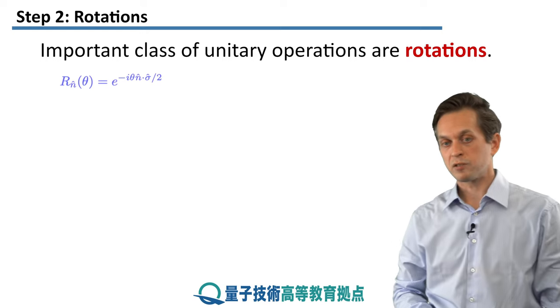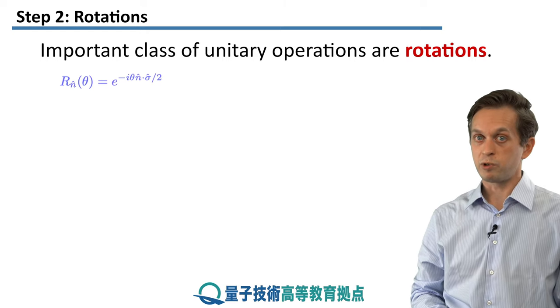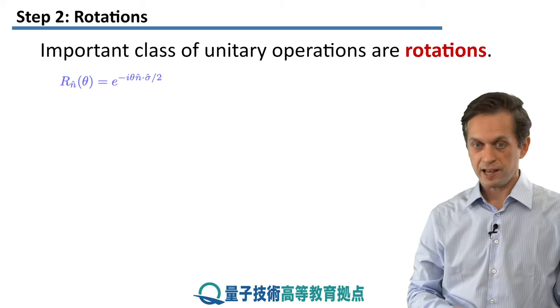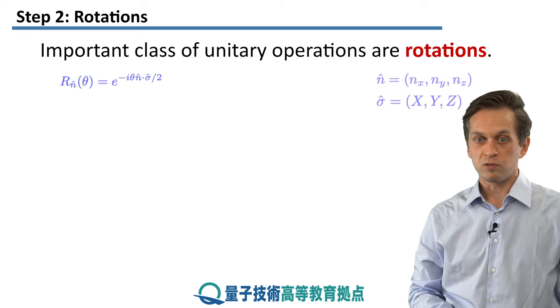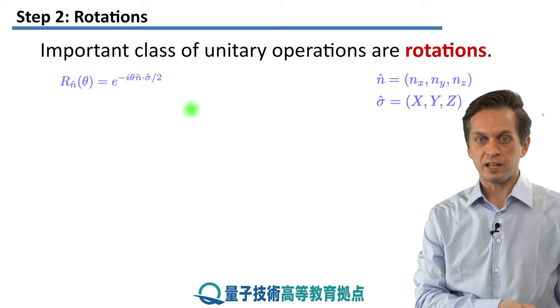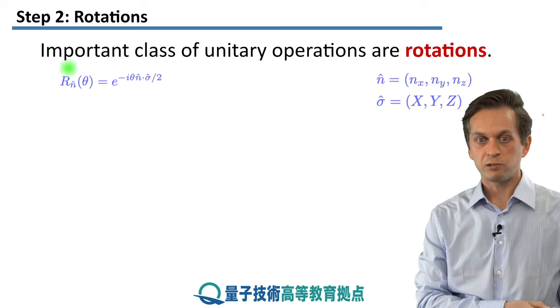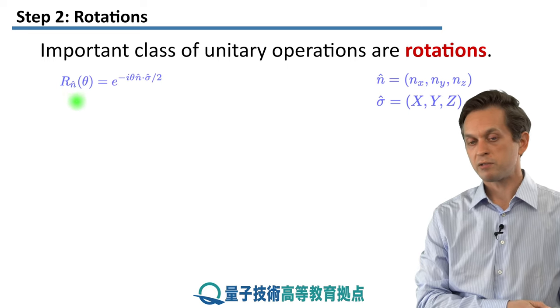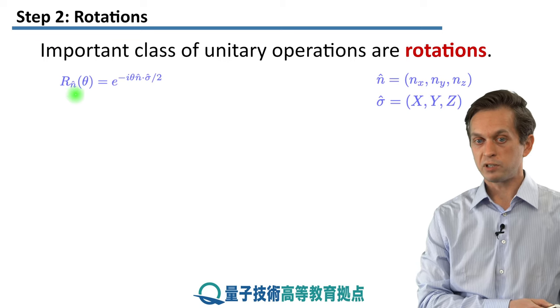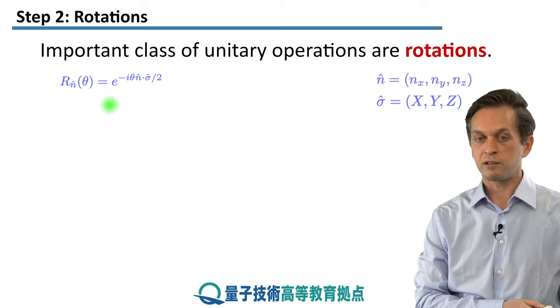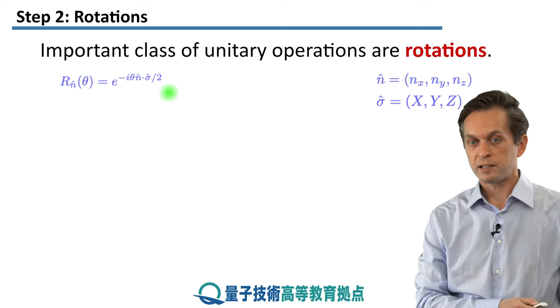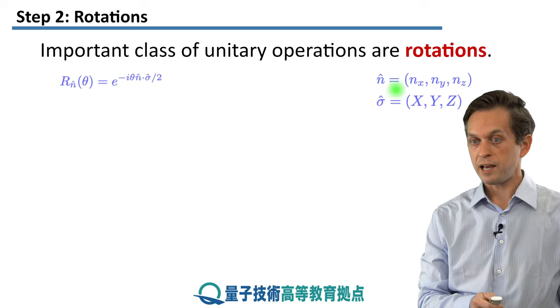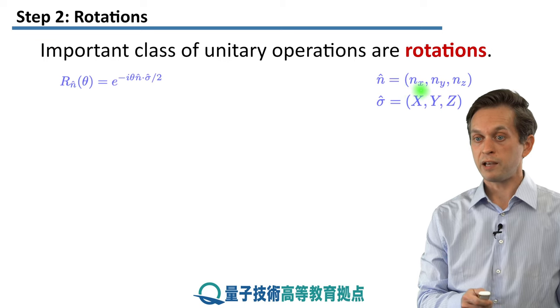Now, another very important class of unitary operations are rotations. And this is where the Bloch sphere representation will be extremely handy. So the rotation can be written in this strange looking form, strange for now. And what it means is that we are rotating around some arbitrary direction in the Bloch sphere by some arbitrary angle θ.